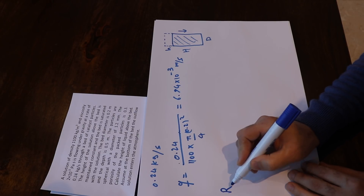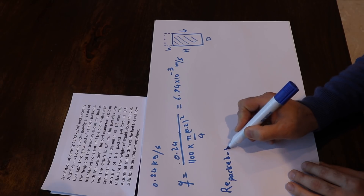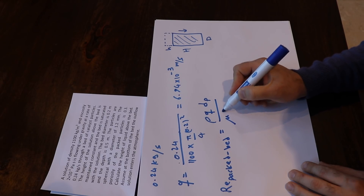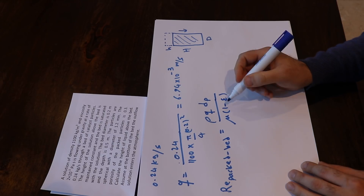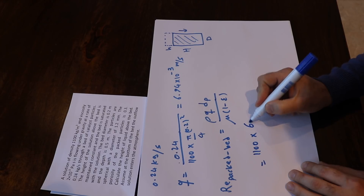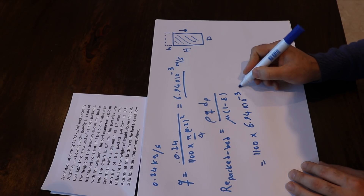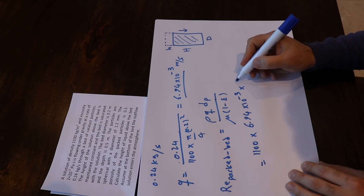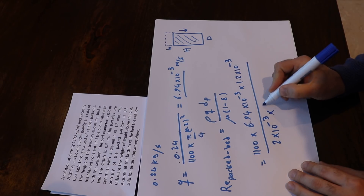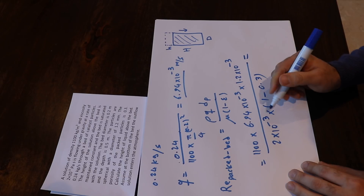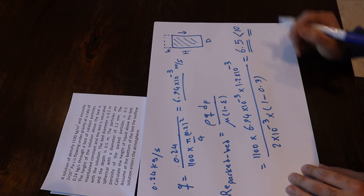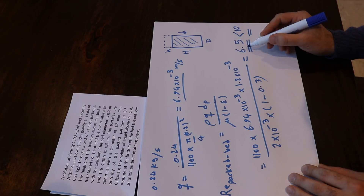Now calculate the Reynolds number for the packed bed: Re = (ρ × u × d_p) / (μ × (1 − ε)). Plugging in: (1100 × 6.94×10⁻³ × 1.2×10⁻³) / (2×10⁻³ × (1 − 0.3)), giving Re = 6.5, which is less than 10.